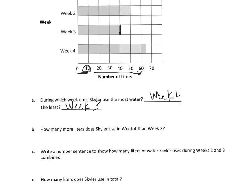How many more liters does Skyler use in week 4 than in week 2? So, in week 4, it's halfway between 60 and 70. So, that's going to be 65. And then for week 2, it's right to this point, so it's 50. And if I want to know how many more, I'm trying to find the difference. And I know that it's going to be 15. And there's my answer statement there. Skyler uses 15 more liters of water in week 4 than in week 2.